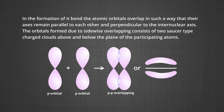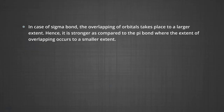The orbitals formed due to sidewise overlapping consist of two saucer-type charge clouds above and below the plane of the participating atoms. The strength of a bond depends upon the extent of overlapping. In the case of sigma bond, the overlapping of orbitals takes place to a larger extent; hence sigma bond is stronger compared to pi bond, where the extent of overlapping is smaller. It is important to note that in the formation of multiple bonds between two atoms, a pi bond is formed in addition to a sigma bond.